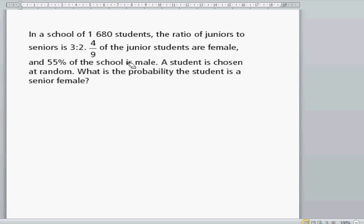In a school of 1,680 students, the ratio of juniors to seniors is 3 to 2. Four-ninths of the junior students are female, and 55% of the school is male. A student is chosen at random. What is the probability the student is a senior female?